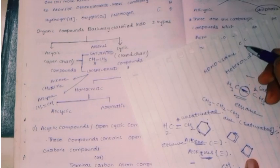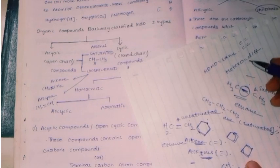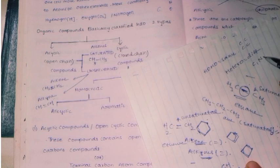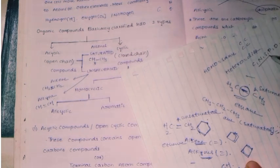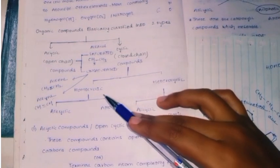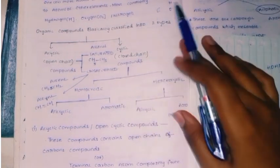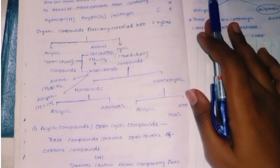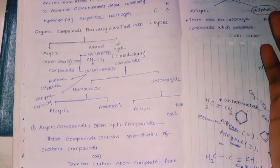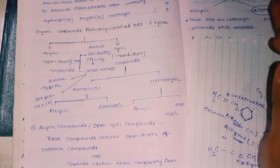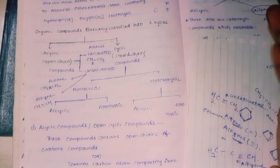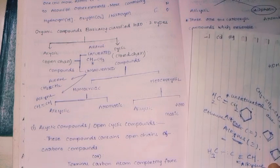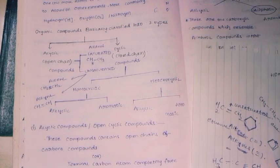Hetero means different atoms are included in the ring — nitrogen, sulfur, phosphorus, oxygen, etc. Homo means only carbon compounds are present, where hydrogen is also included. These elements make it homocyclic.